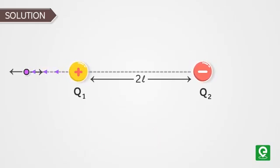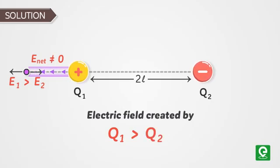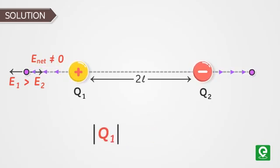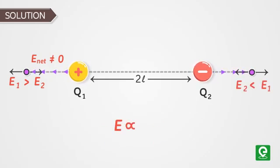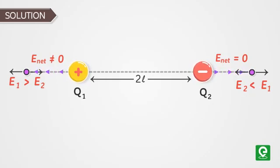At a finite distance to the left of q1, the net electric field cannot be zero, because the electric field created by q1 will be greater than that of q2 — since the magnitude of q1 is greater, and electric field is directly proportional to q divided by r squared. At a finite distance to the right of q2, the net electric field is zero, where the electric field created by q2 at a particular point cancels out the electric field created by q1.